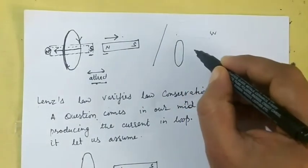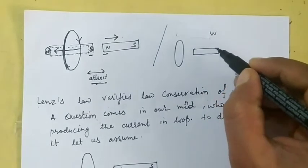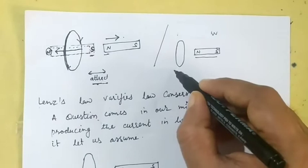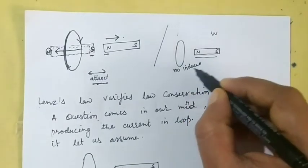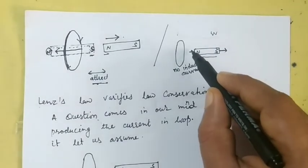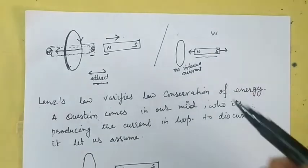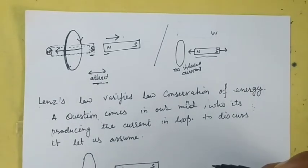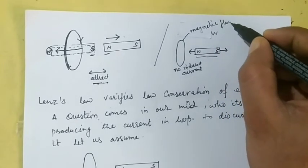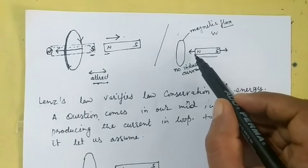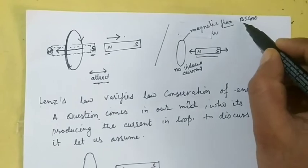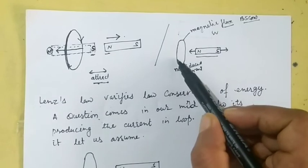A bar magnet is placed along the axis of a loop. When this pole is at rest, there is no induced emf or current. When it is pushed away or towards the loop, an induced emf is produced. This is because the magnet produces a magnetic field, and with a certain surface area, the magnetic flux linked with the coil is given by BS cos(theta).